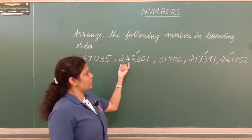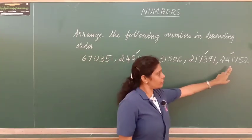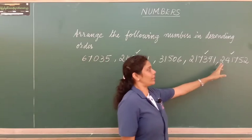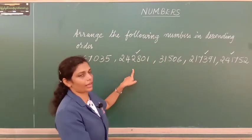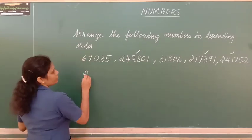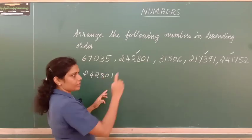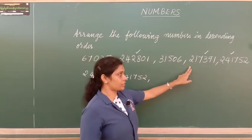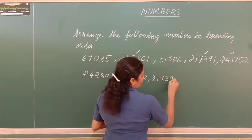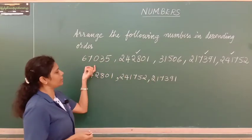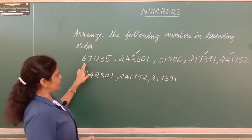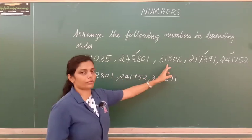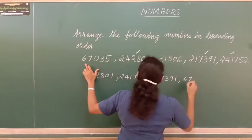Comparing the 6-digit numbers: 2 is common, then we compare the next digit — 4, 1, 4. So 2,42,801 and 2,41,752 are bigger than 2,17,391. Between the first two, 2,42,000 is bigger than 2,41,000, so 2,42,801 comes first, then 2,41,752, then 2,17,391. For the 5-digit numbers, 67,035 is greater than 31,000-something, so we write 67,035 next, followed by the smaller 5-digit number.